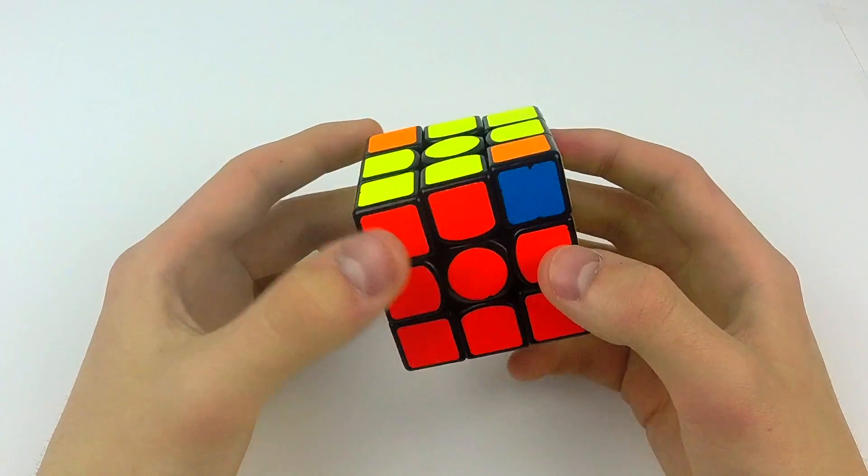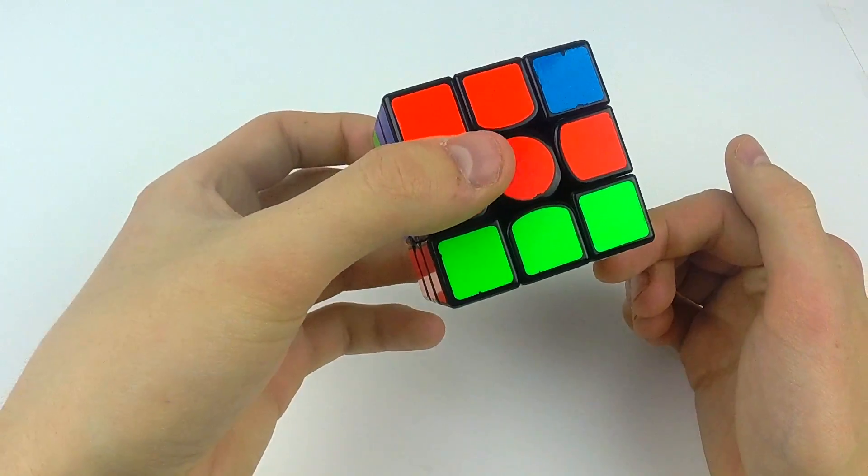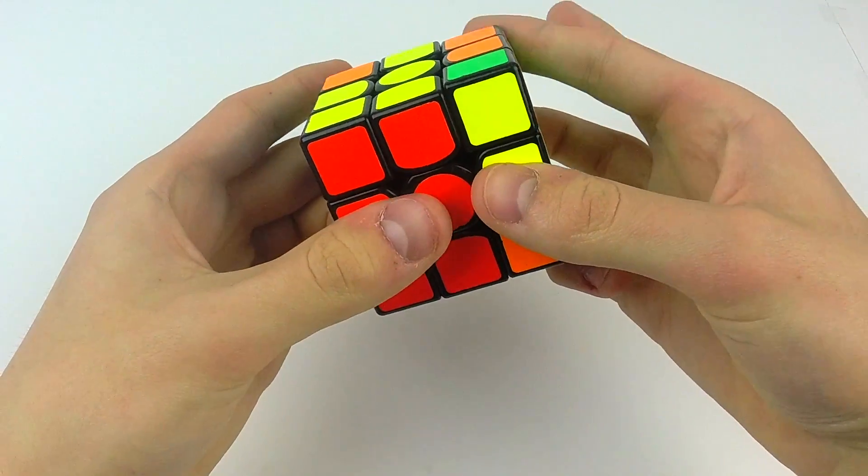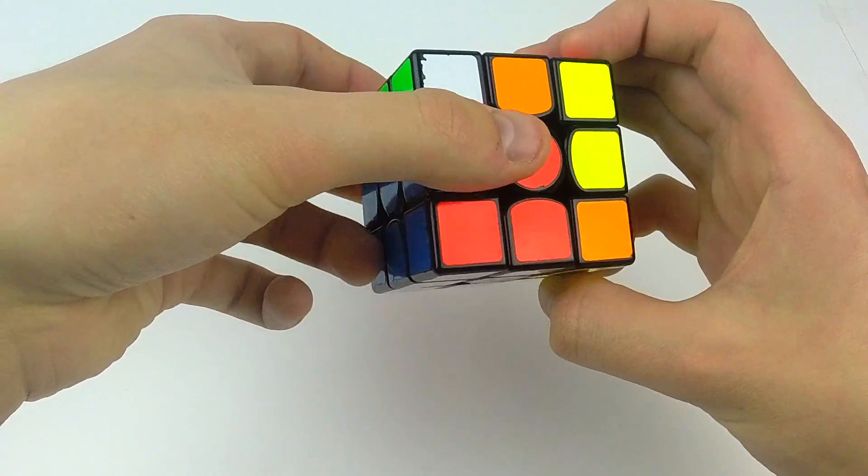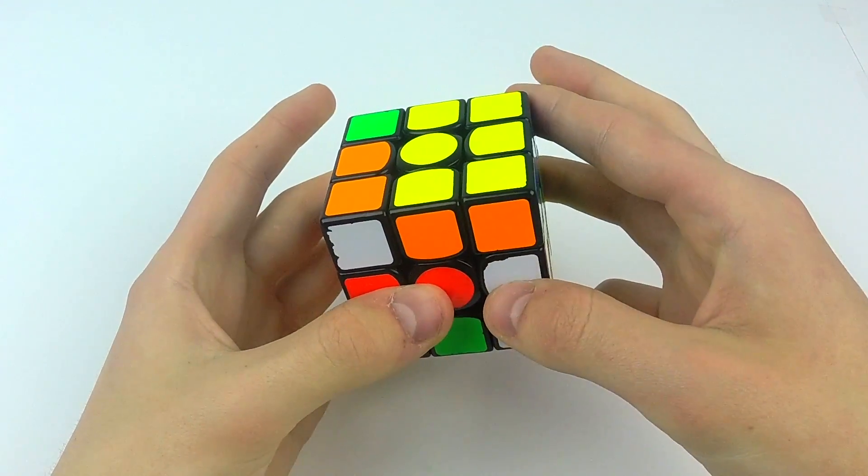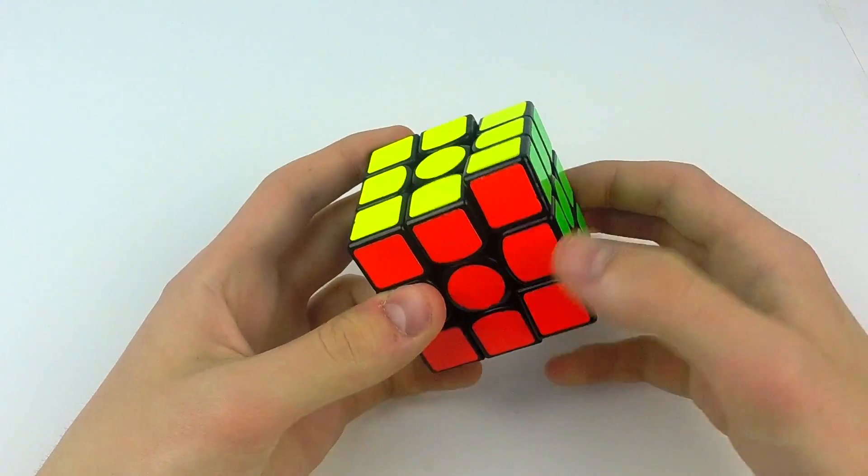Obviously being able to do this push D' makes doing this alg much faster and much more fun. So here's the execution. So R' double flick U2 R' then you do this push D' then R double flick U2 R' D R2.